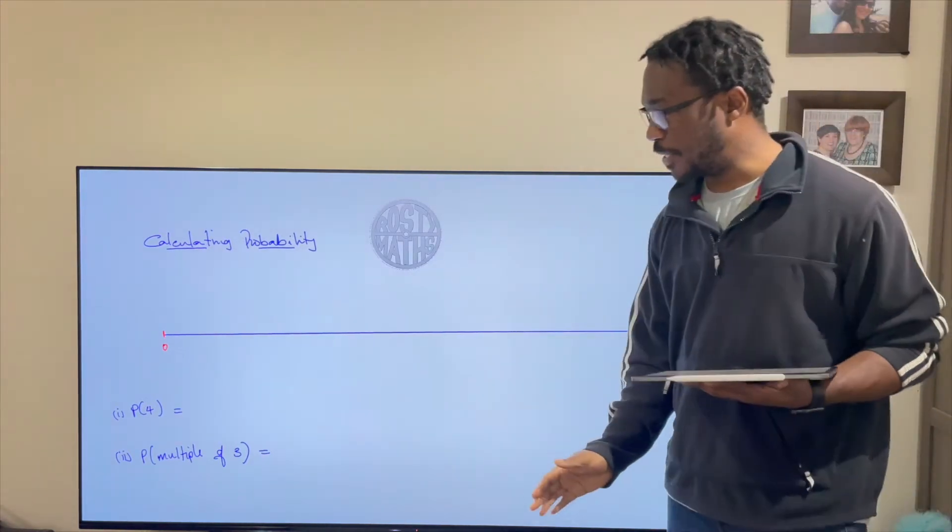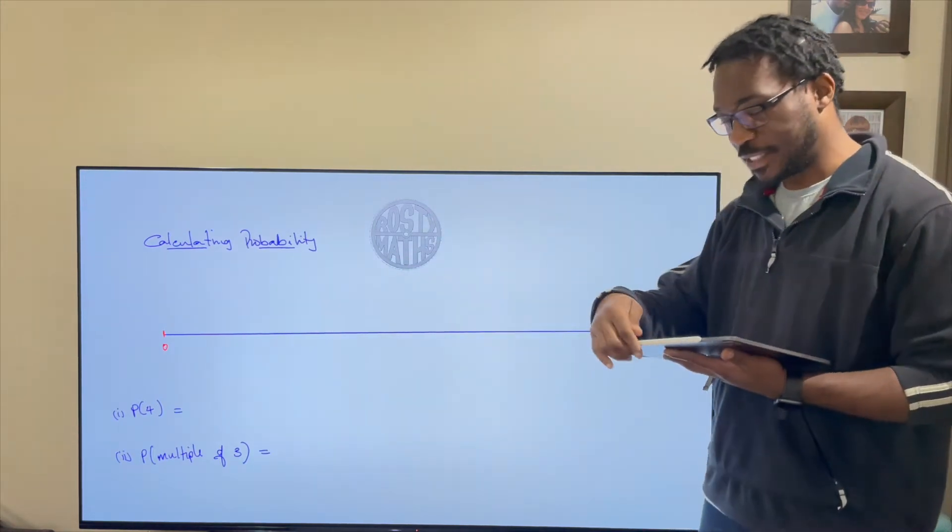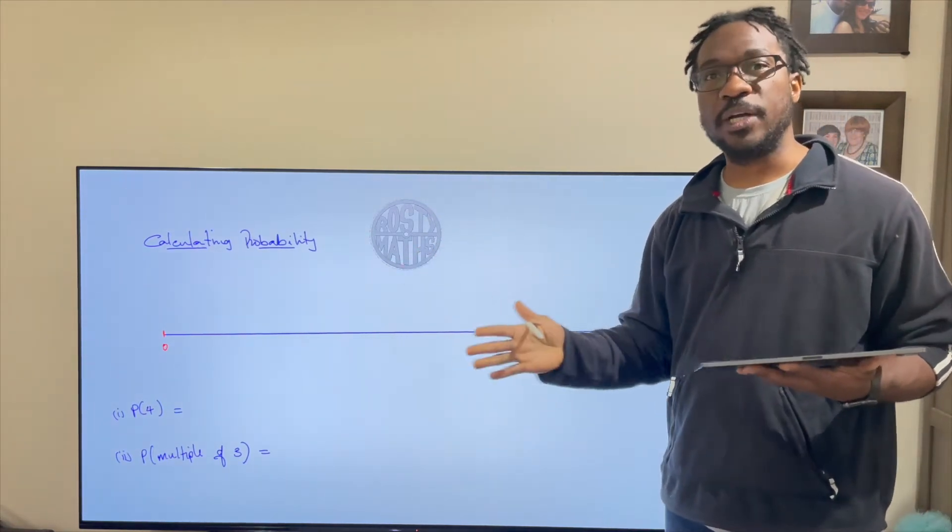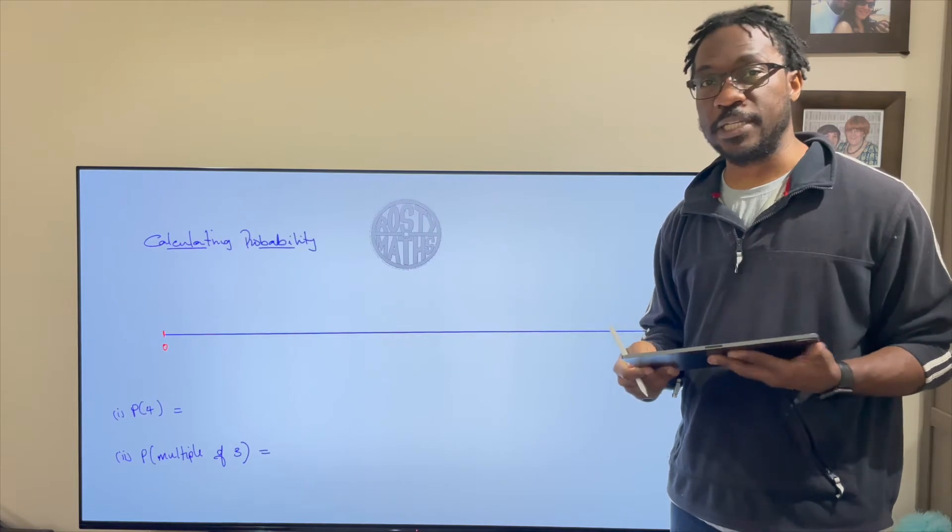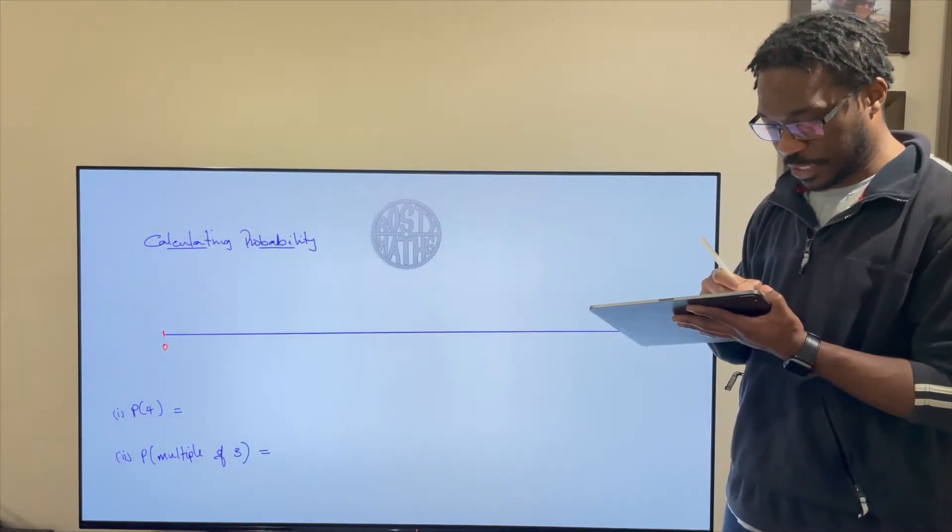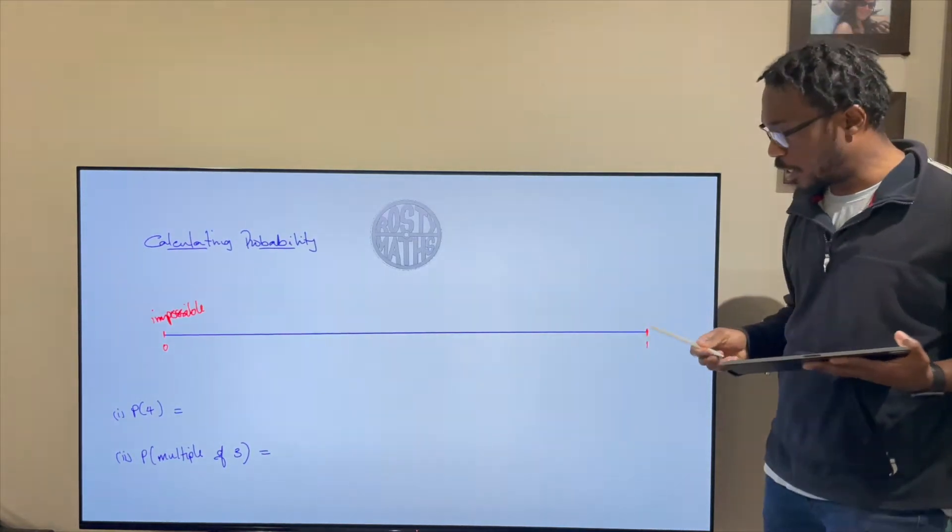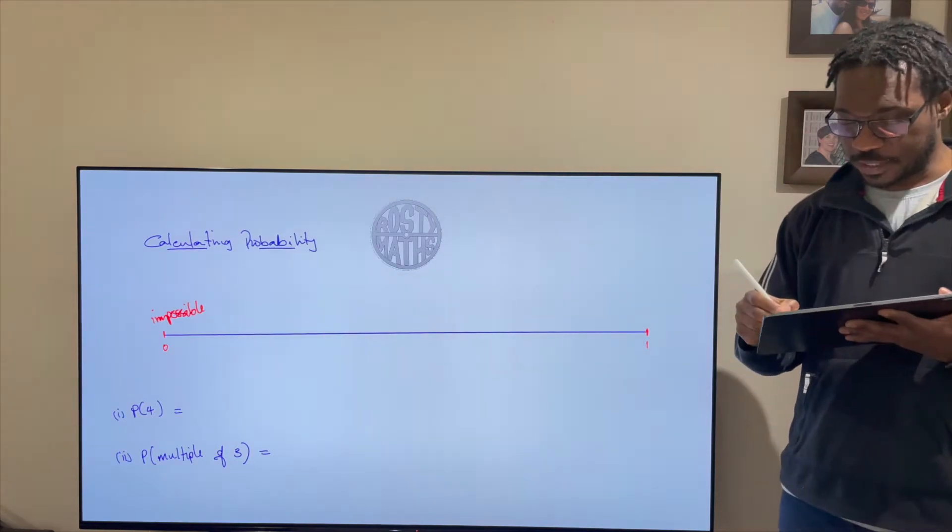Let me take you back a little bit. When you were in primary school and you did probability you used specific words to represent your probability. So for example if the probability was zero you said that this thing was impossible and then if it was one you said that that thing was certain.